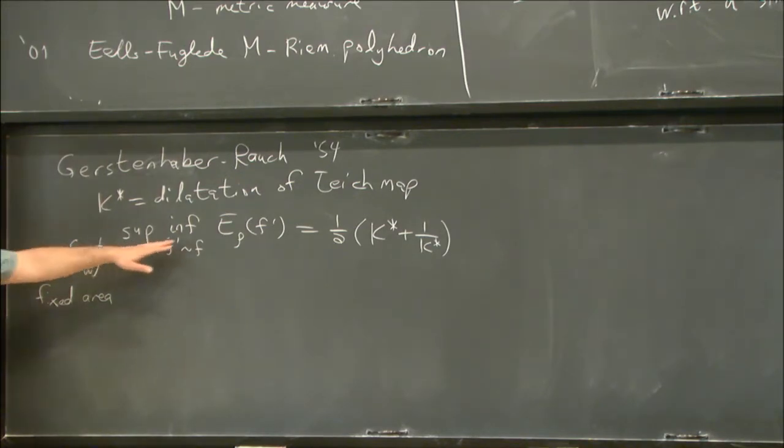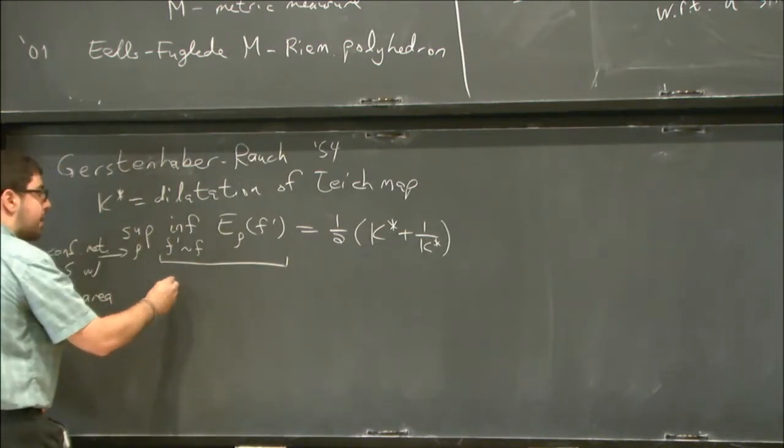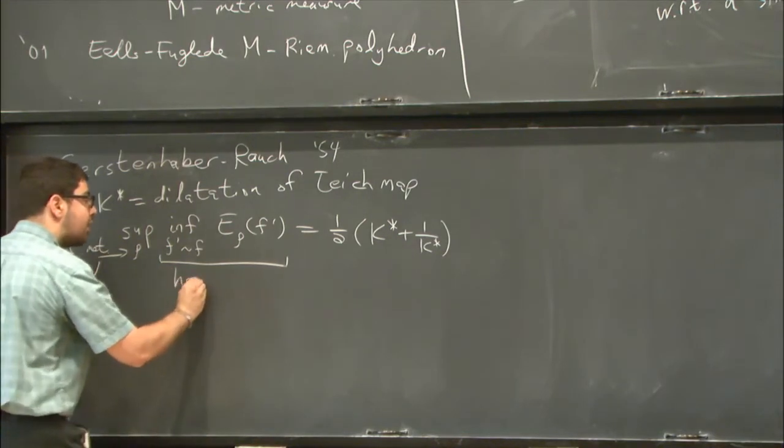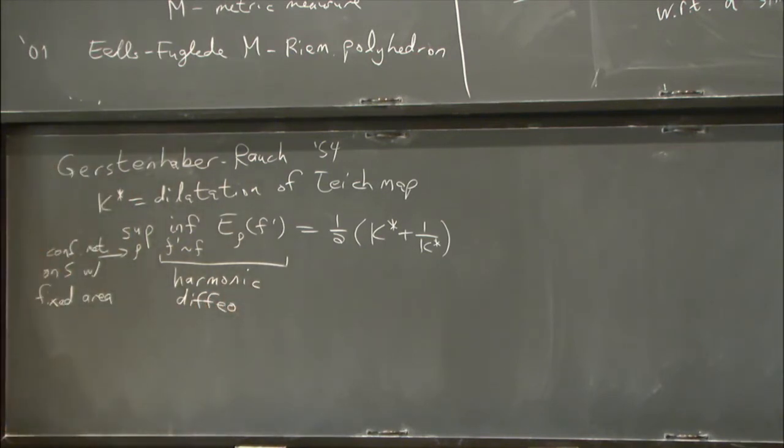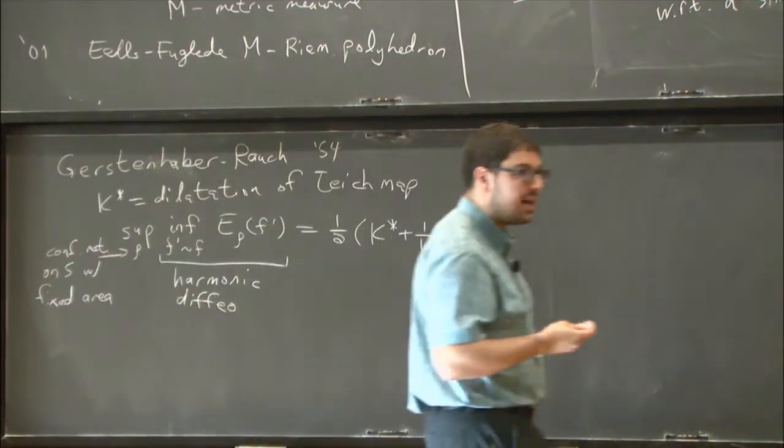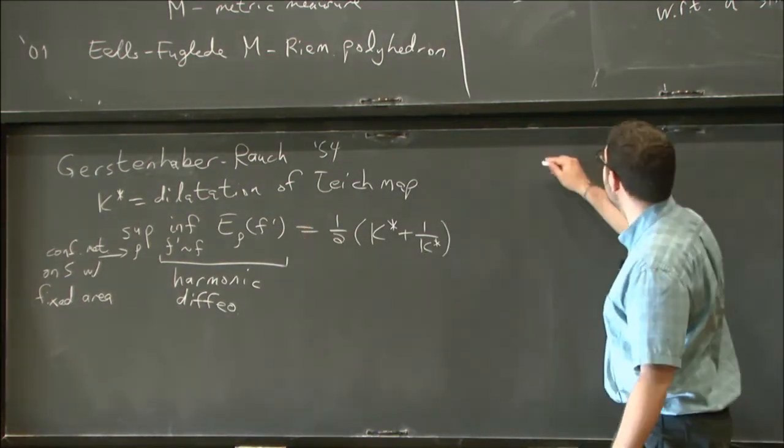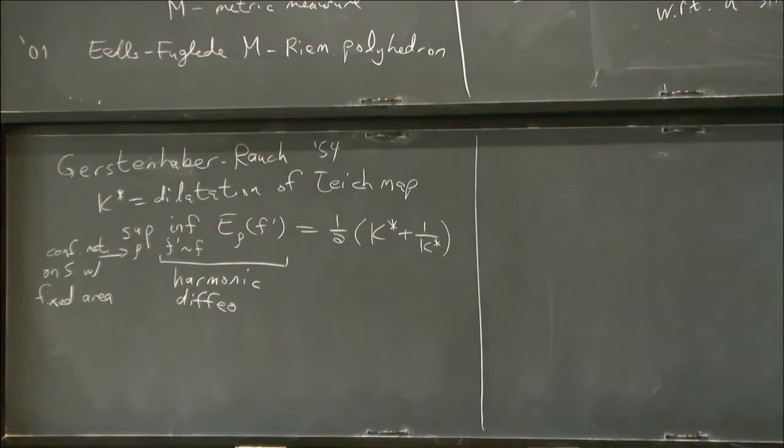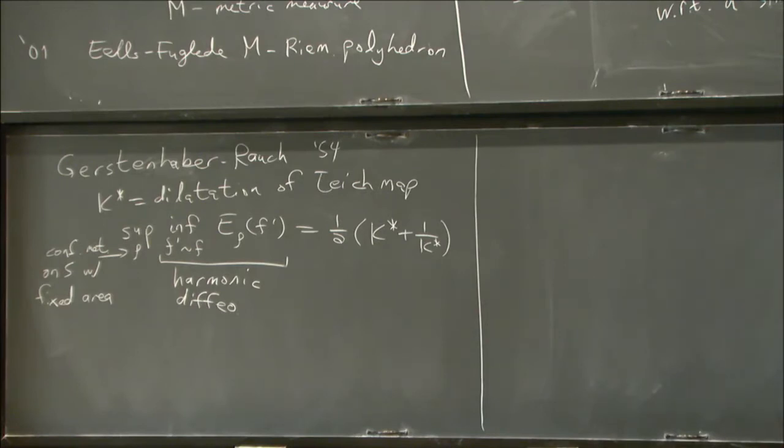So they prove this modulo sum continuity assumption, which was investigated decades later by a number of authors. In particular, Messe carried out this max min approach to construct the Teichmuller map sort of from scratch. And I'll just comment that this infimum problem on the interior, this constitutes looking for a harmonic diffeomorphism with respect to the metric rho. So for each metric, you have to find a harmonic map. And then you take the supremum over all metrics.